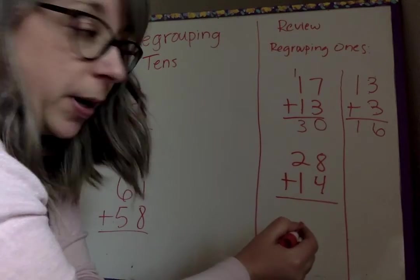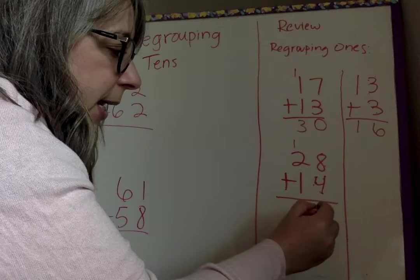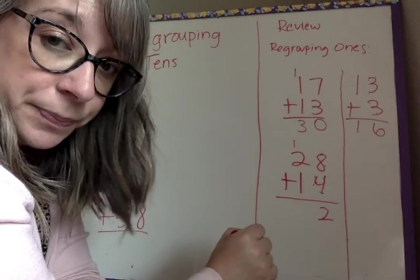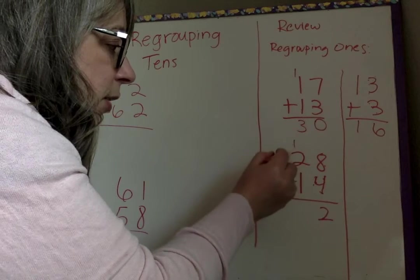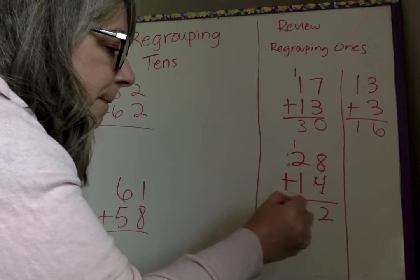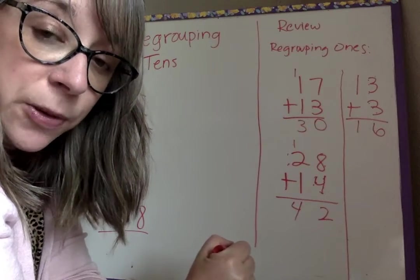So 8 plus 4 is 12. So 8, 9, 10, 11, 12. I'm going to put our 1 up there, and our 2 in our ones place. And then now we're going to add our 10s place. So 1, 2, 3, 4. Or 2 plus 2 is 4. It's 42. So there's our regrouping the ones place.